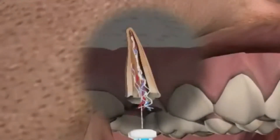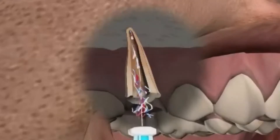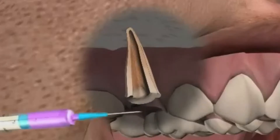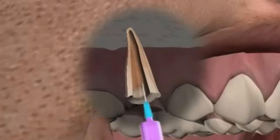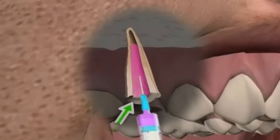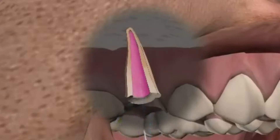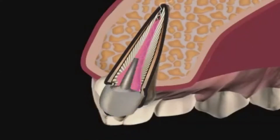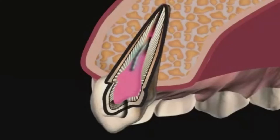During orthograde root tip resection, canal cleaning and filling should be done from the top down. Sometimes access from above is not possible, for example on pivot teeth or if a root canal instrument is chipped and stuck in the tooth interior.